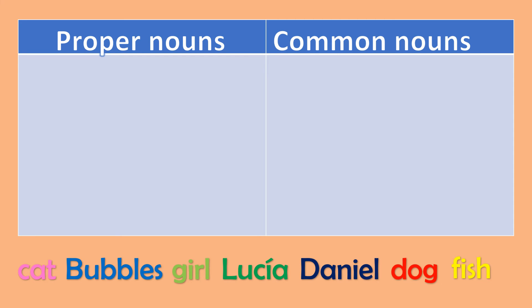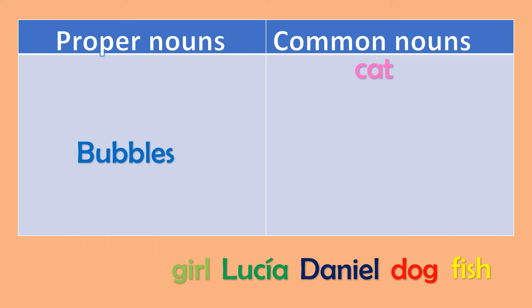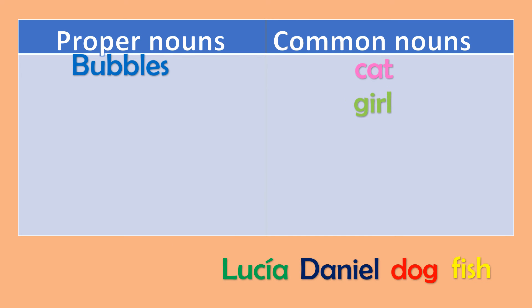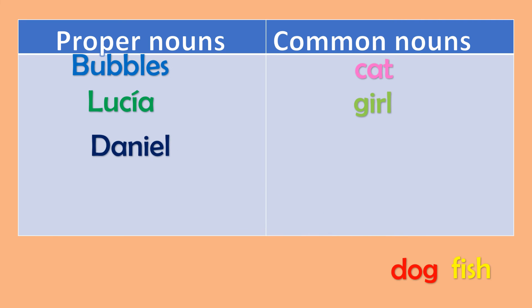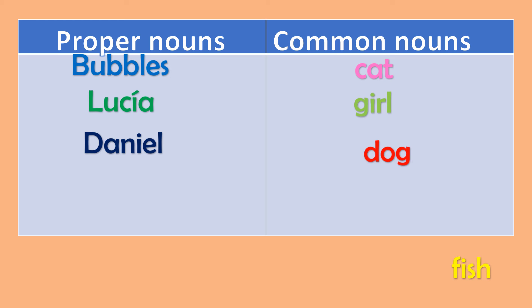Guys, this time we are going to review what we have learned. I'm going to say the name of those words and you are going to tell me if it's a proper noun or a common noun. Let's begin. Cat — common noun. Bubbles — if we have a pet and we name him Bubbles, that is a proper noun. Girl — there are many girls, so that is a common noun. But if the girl's name is Lucia, Lucia is a proper noun. Daniel is a proper noun. Dog is a common noun — there are many dogs. And fish is also a common noun.